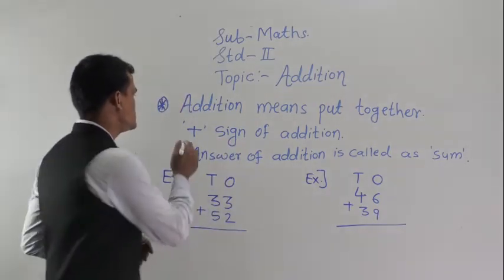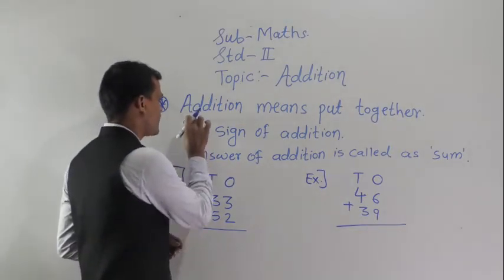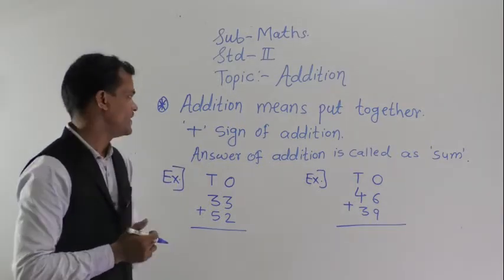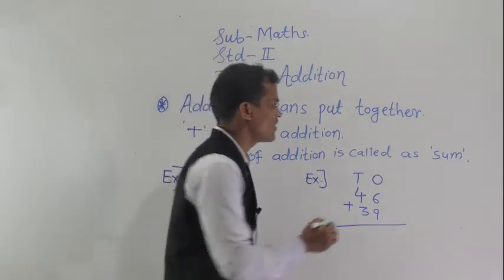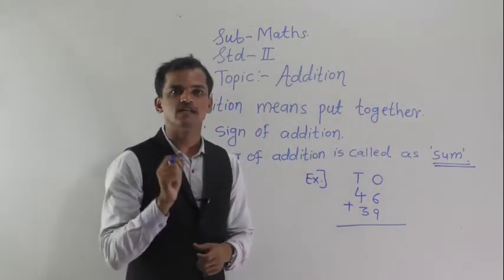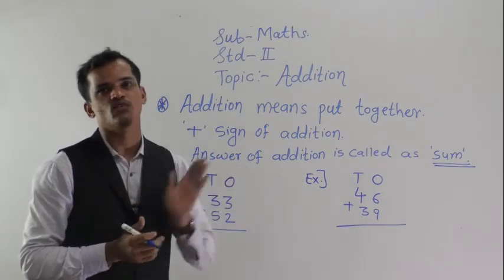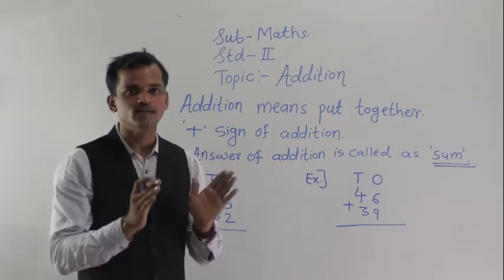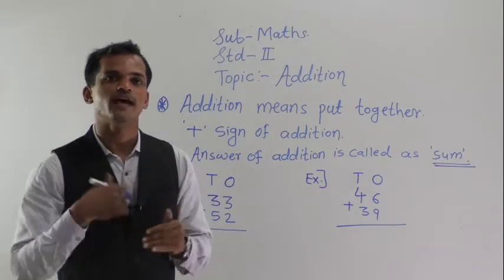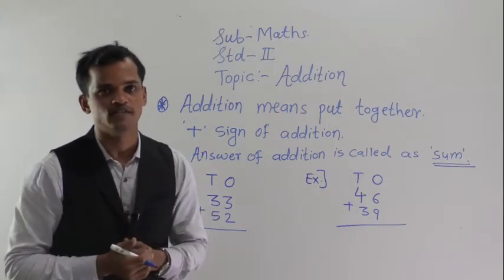This is the sign of addition — one horizontal line and one vertical line. The answer of addition is called as sum. Now we will revise what we have learnt last year, and we will extend that idea and learn more about addition.